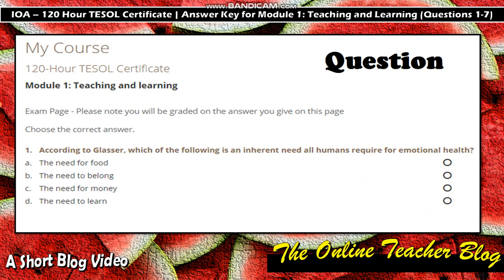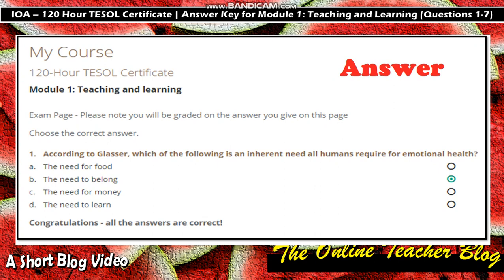Question 1: According to the chart, which of the following is an inherent need all humans require for emotional health? A) The need for food, B) The need to belong, C) The need for money, D) The need to learn. The answer is letter B: the need to belong.